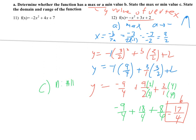That's the answer for part b. For part c, domain and range: domain for parabolas is always all real numbers — it goes left and right forever. The vertex is at a y-value of 17/4, and since this is a maximum, all y-values are underneath that. So for the range, y is less than or equal to 17/4.